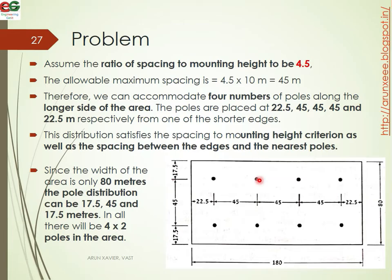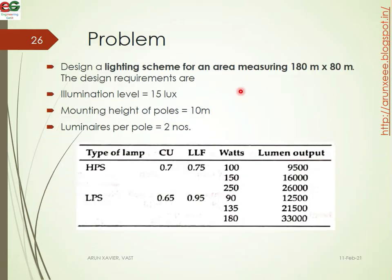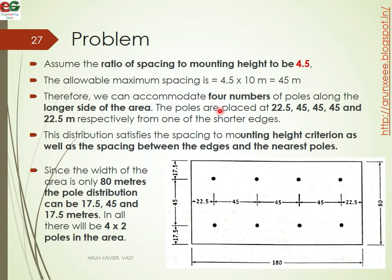The ratio of spacing to mounting height must not exceed 4.5. The allowed maximum spacing is 4.5 times 10 meters, since the mounting height is 10 meters. Therefore, the maximum spacing is 45 meters. Based on this, we can accommodate only 4 poles along the longer side of the area.